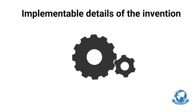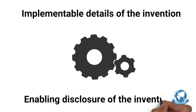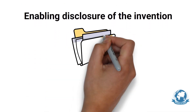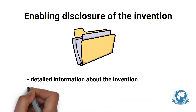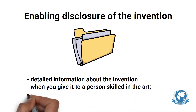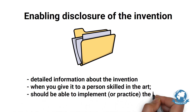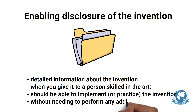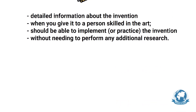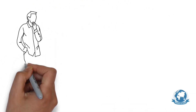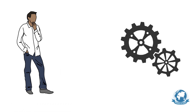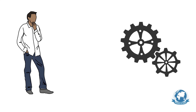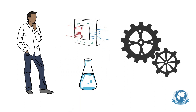We need implementable details of the invention to create an enabling disclosure. An enabling disclosure is such detailed information about your invention that when given to a person skilled in the art, that person should be able to implement or practice the invention without needing to perform any additional research. In simple language, we need just enough information such that a person from the same field should be able to implement or practice the invention without difficulty or without needing to do any research.